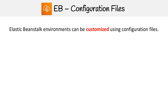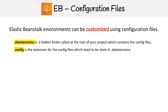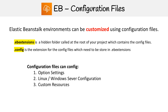If we want to change the way our Elastic Beanstalk environment works programmatically, then the way we're going to do it is through configuration files. These configuration files sit in a hidden folder called EB extensions at the root of your project, and they're going to have an extension that says dot config on them. That's what Elastic Beanstalk expects.